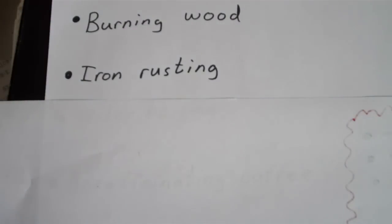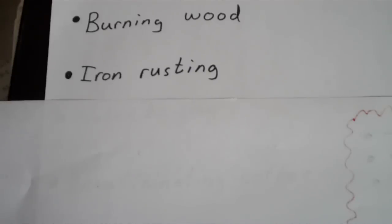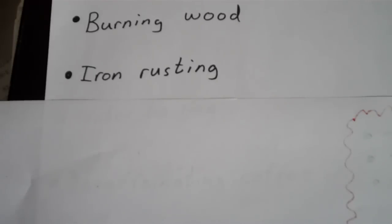Iron rusting — is that a physical or a chemical change? This one might be a little tricky, but the answer is it's actually a chemical change, because during the process of rusting, the iron atoms react with oxygen in the air to form iron oxide, and that's where you get rust. So iron rusting is, in fact, a chemical change.